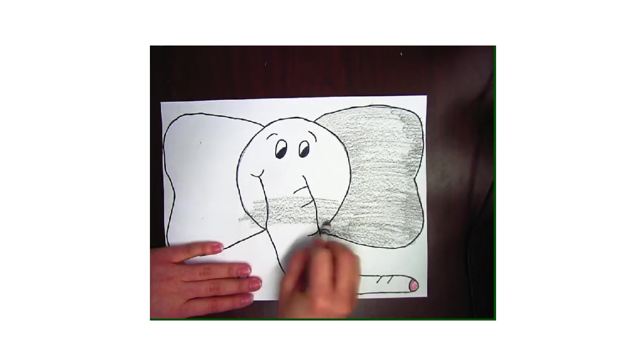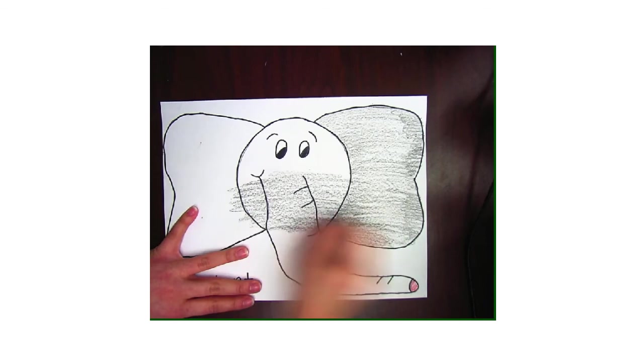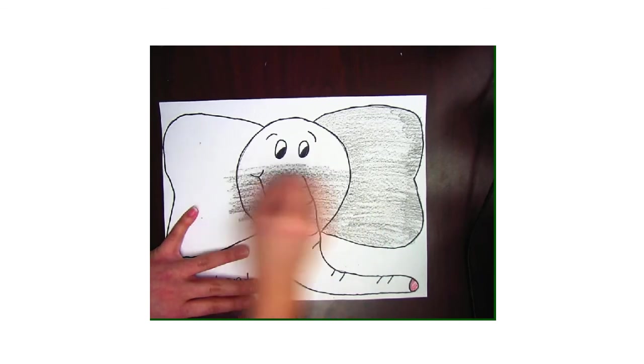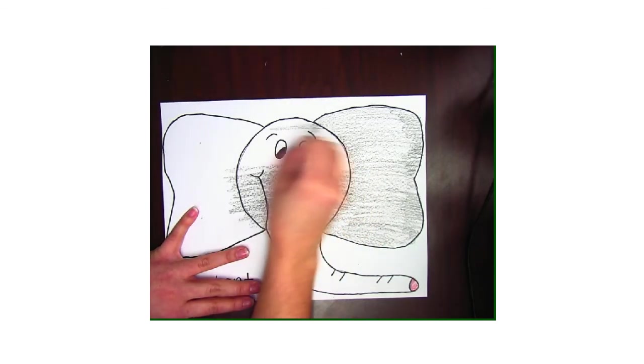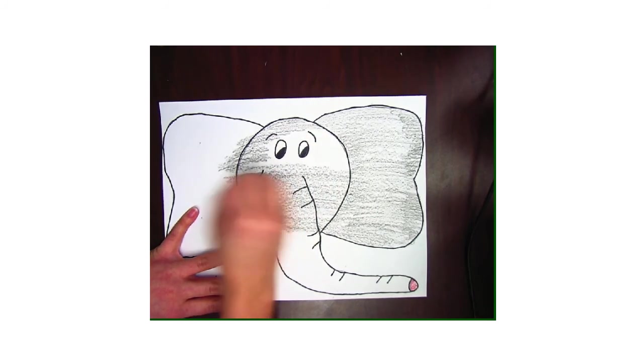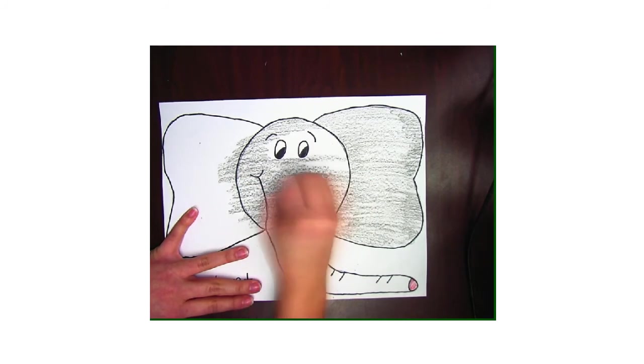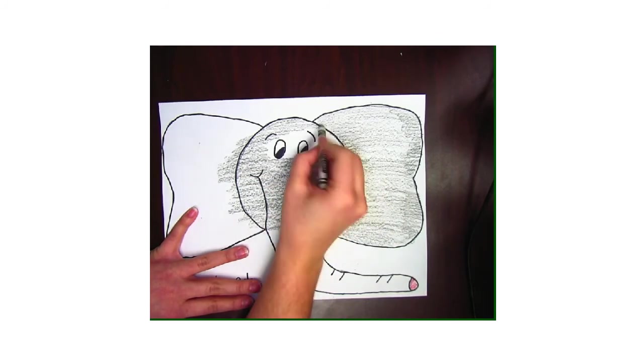Since the elephant is just one color, it's super quick and easy for us to color it. We want to make sure when we get close to those lines that we're being super slow and staying inside the lines that we need to stay inside of.